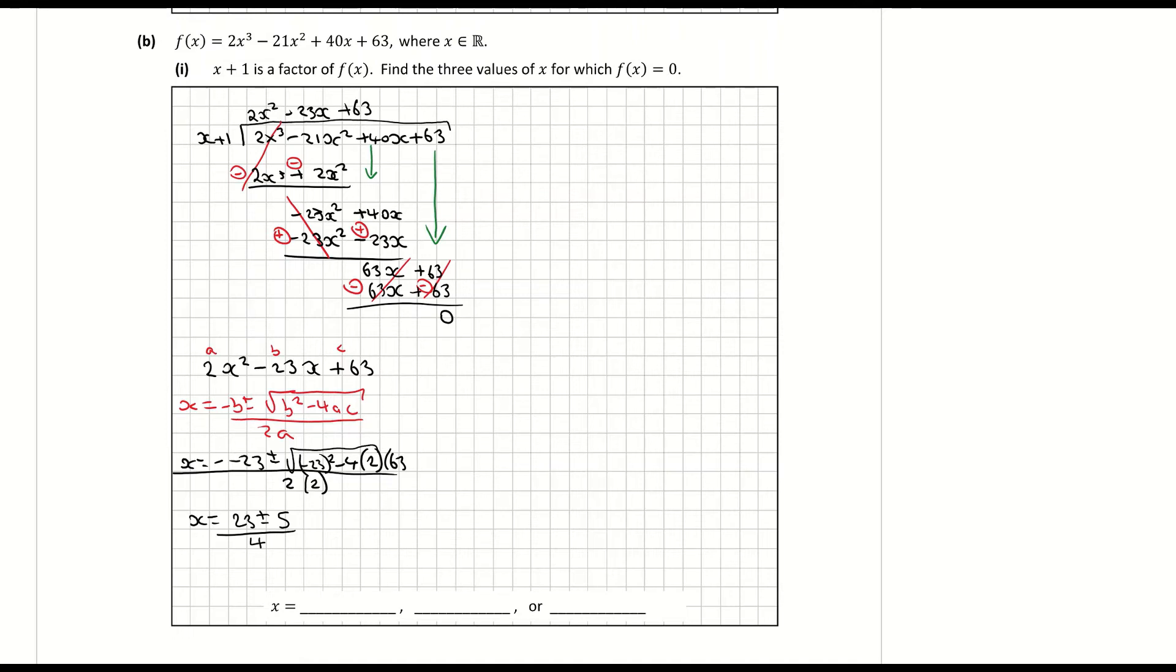So running out of space here. So let's bring all that up here. So that means that x is equal to 23 plus 5 over 4 and x is equal to 23 minus 5 over 4. So x is equal to 28 over 4 and x is equal to 9 over 2 which is 4.5. So there's two values for x, 7 and 4.5.